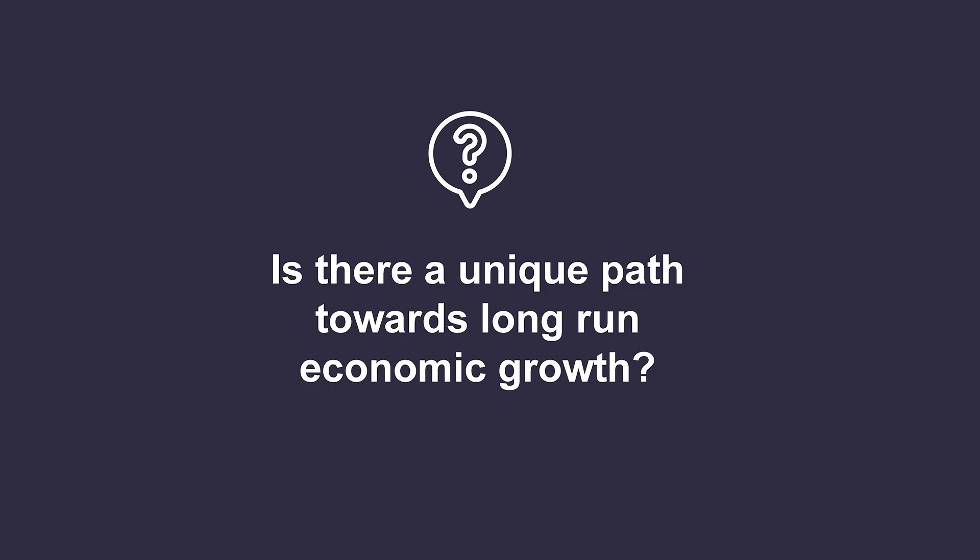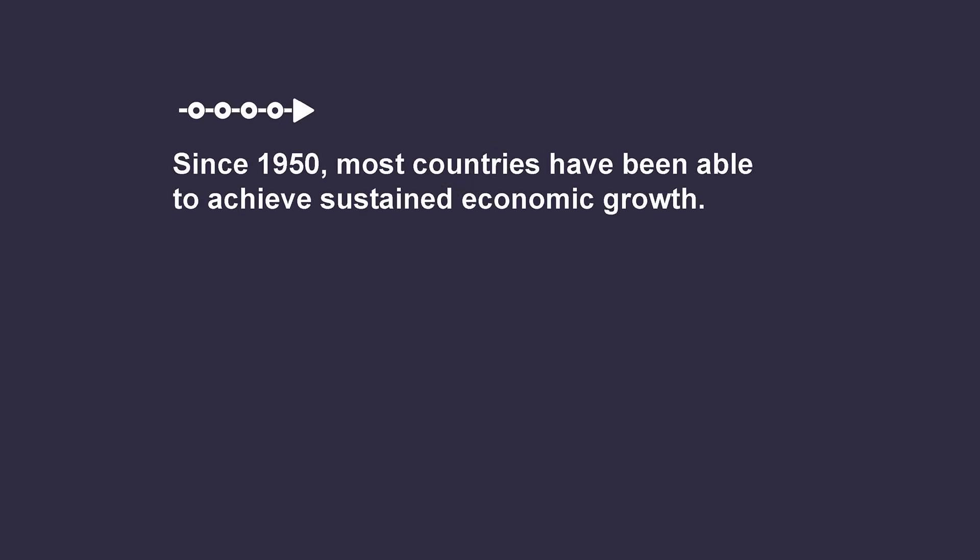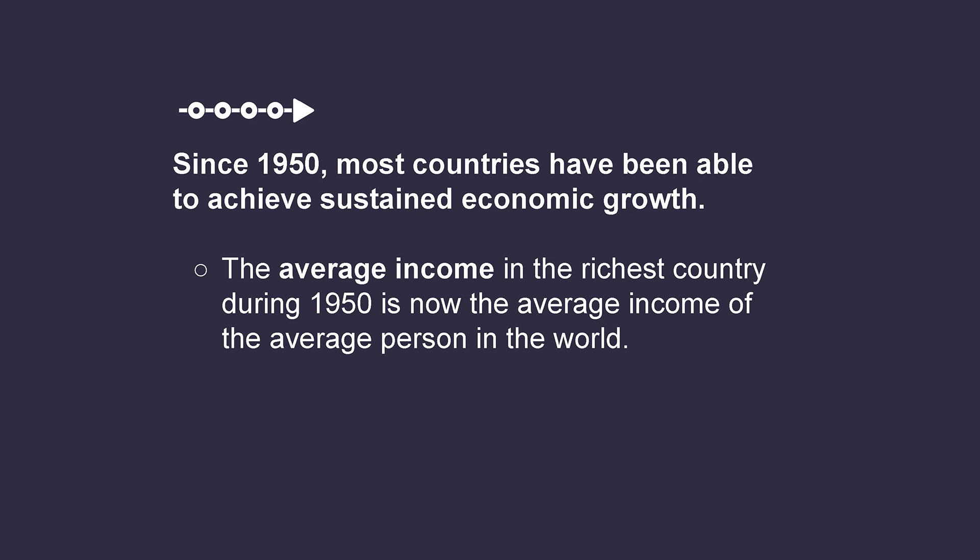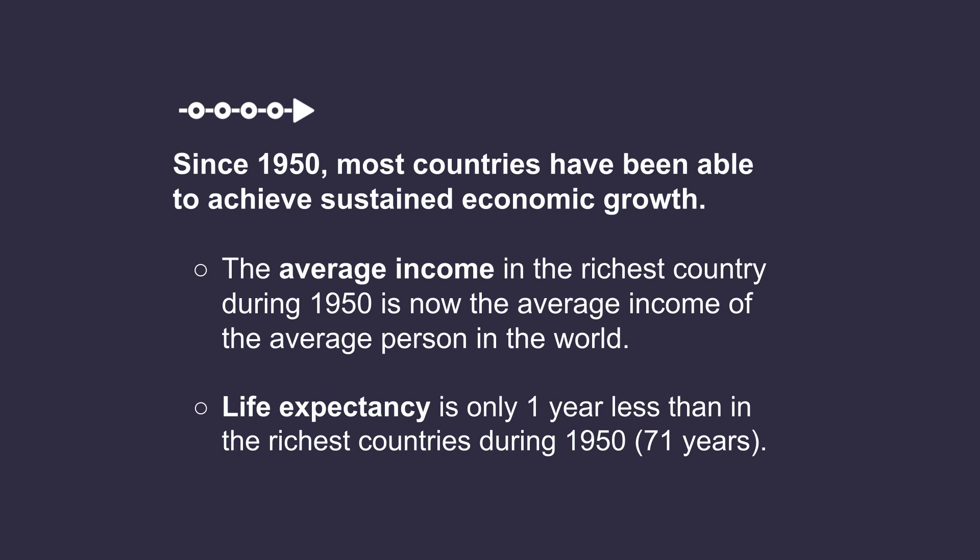This raises a very important question: is there a unique path towards long-run economic growth? If every country follows the same recipe — creating a sustainable mix between productivity, workforce participation, and demographic expansion — will they all reach the same results? Since 1950, most countries have been able to achieve sustained economic growth. For example, average income in the richest country during 1950 is now the average income of the average person in the world. This is evidence for global progress in terms of long-run economic growth. Long-run economic growth can also lead to social progress, meaning better standards of living. One fact that helps demonstrate this is that life expectancy now is only one year less than in the richest countries during 1950, which is 71 years. This progress is also associated with overcoming malnutrition, poor health, and precarious working conditions.